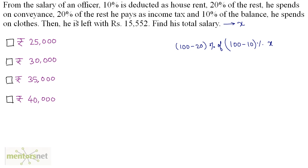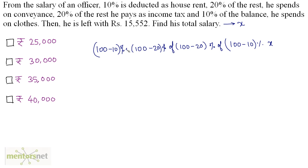20% of this amount is again given as income tax, so what is left is again (100 - 20)% of what is left. This is the remaining amount after deducting tax, conveyance, and house rent. But the officer also spends 10% of the balance on clothes, so what remains is (100 - 10)% of the remaining amount.